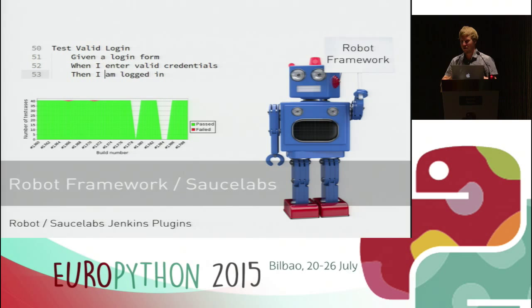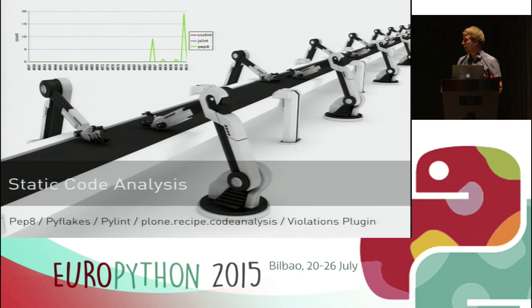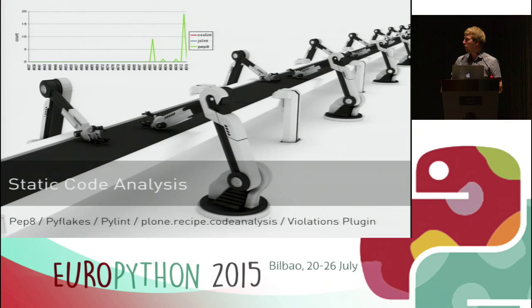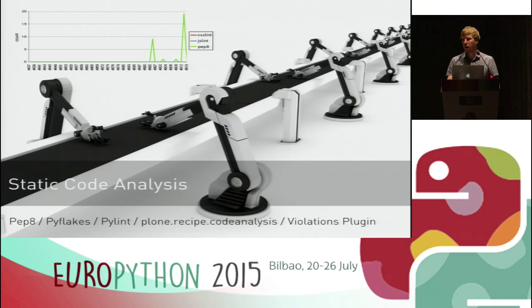One thing especially important for Python, because it's a dynamically typed language, is static code analysis — it lets you track possible bugs early. You're probably familiar with the tools PEP8, PyFlakes, and PyLint. We created a wrapper in the Plone community called plone.recipe.codeanalysis to make our best practices testable. You can present all those results using the Jenkins Violations plugin, which gives you nice statistics about violations — not only for Python, but also JSLint, CSSLint, and more.